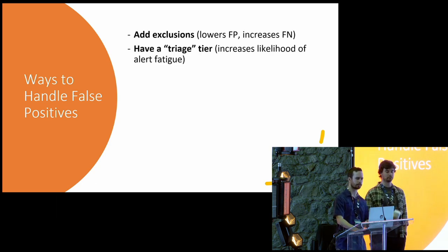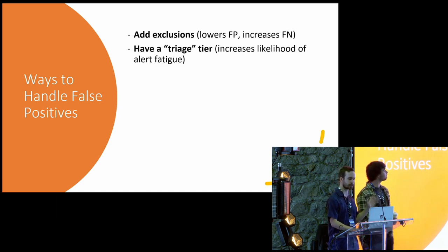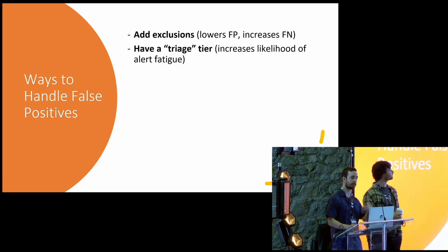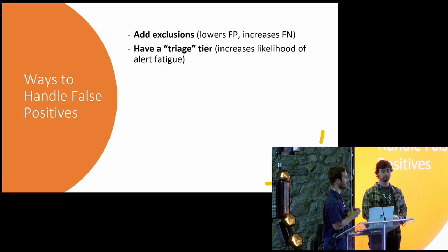You can have a triage tier. And not everybody uses the term triage the same way. But for this presentation, triage means having either analysts or automations that look at alerts and close quickly obvious false positives. And this is usually good to do. But we need to be careful because it actually increases the likelihood of alert fatigue for the analysts that look at the alert first.